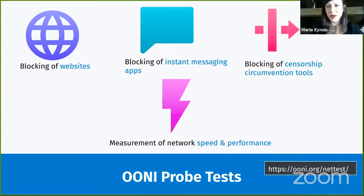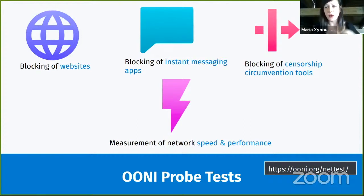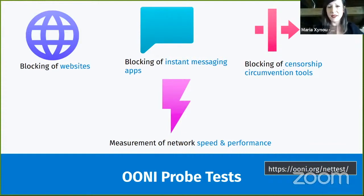When you run the OONI Probe app, you can check if specific websites are blocked and collect data showing how your ISP is blocking those websites — which censorship technique they're implementing. You can also check whether specific instant messaging apps are blocked. We have tests for WhatsApp, Telegram, Signal, and Facebook Messenger, and by running these tests you can check if the apps are blocked by your ISP and, if so, how they're blocking them.